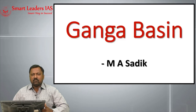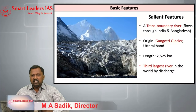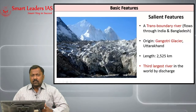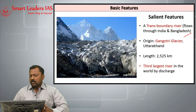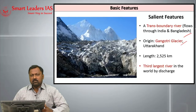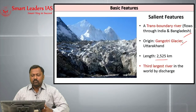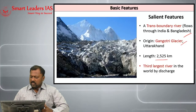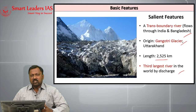Let us go deep into the slides now and try to understand some basic features of the river Ganga. Ganga or Ganges is a transboundary river which flows through India and Bangladesh. It has got its origin in Gangotri glacier in Uttarakhand, and the length of this river Ganga is 2525 km. Ganga along with the Brahmaputra river system is the third largest river system in the world as far as discharge is concerned.